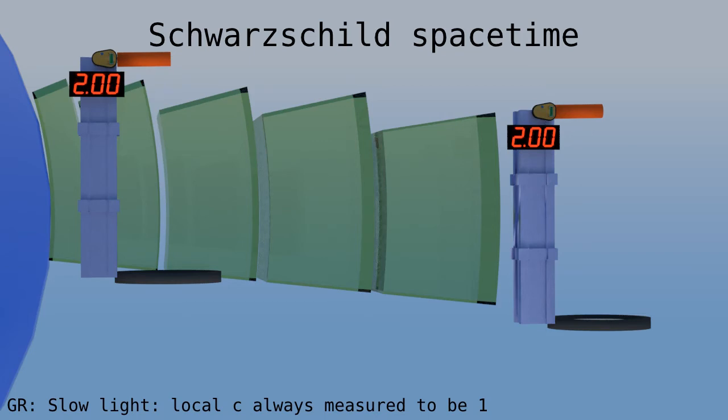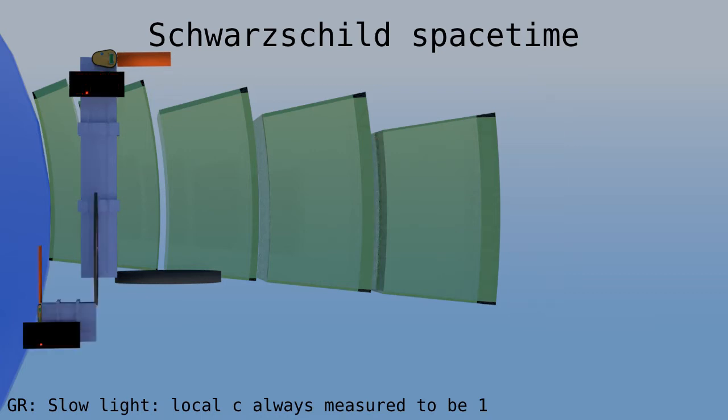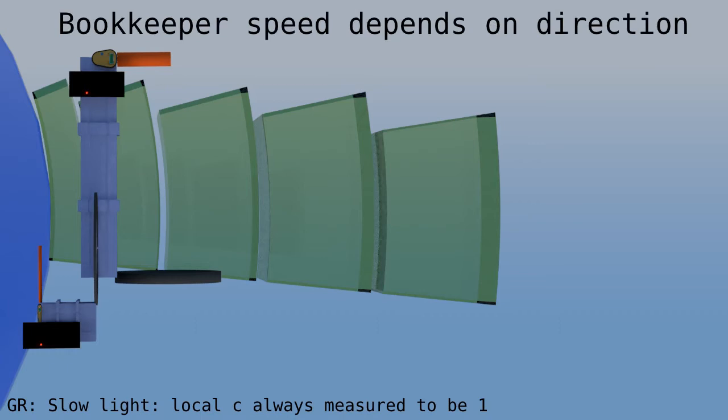So the bookkeeper's speed of light is different. And when two devices are at the same radius but at different orientations, then their clocks will run at the same speed, but they will cover different distances because of length contraction. In other words, the bookkeeper's speed of light differs in the two directions.